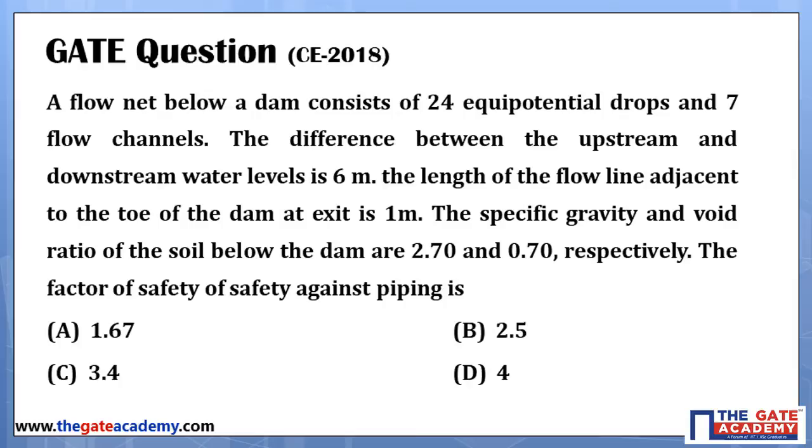The length of the flow line adjacent to the toe of the dam at exit is 1 meter. The specific gravity and void ratio of the soil below the dam are 2.7 and 0.70 respectively.